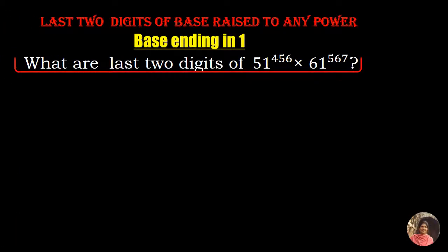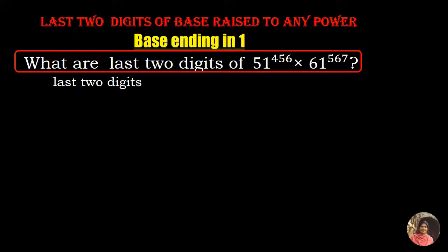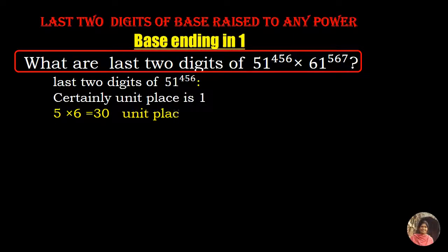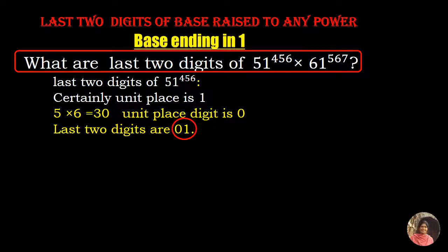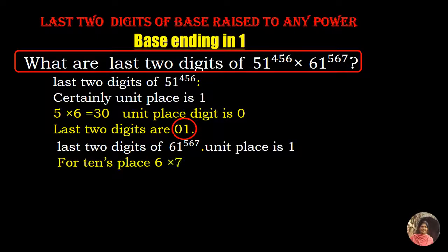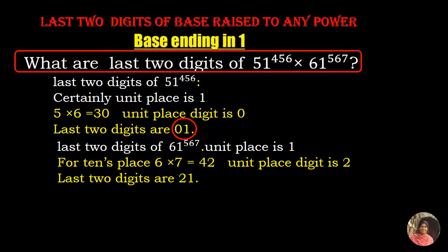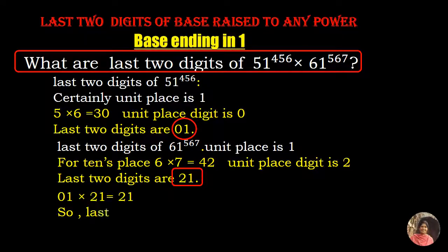Now, an PRMO question. What are the last two digits of 51 raised to the power 456 multiplied by 61 raised to the power 567? For 51 raised to the power 456: unit's digit is 1, and tens digit is 5 multiplied by 6, which is 30 — unit's digit is 0. So last two digits are 01. For 61 raised to the power 567: unit's digit is 1, and tens digit is 6 times 7, which is 42 — unit's digit is 2. So the number is 21. The result is 21 multiplied by 01 is 21. So last two digits will be 21.